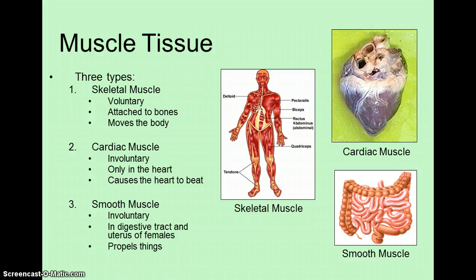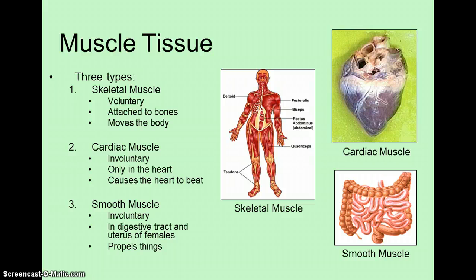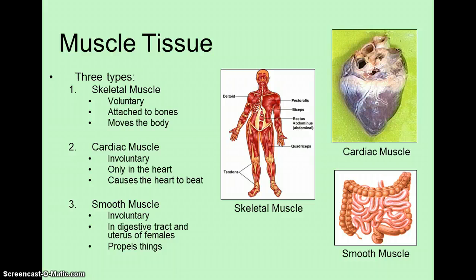The second type of muscle, cardiac muscle, is found only in the heart. It has a physical structure that is very similar to skeletal muscle, and since form fits function, we can predict that cardiac muscle contracts in a very similar way to skeletal muscle, which it does. Cardiac muscle cells shorten when they contract, just like skeletal muscle cells, and while this shortening doesn't cause the body to move, it does squeeze the blood within the heart and pump it throughout the body.